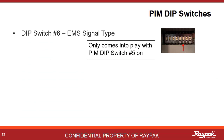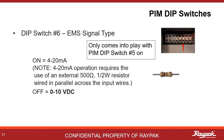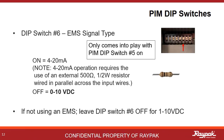Dip switch number six only comes into play when dip switch number five is on. Here's where you select what kind of signal is needed. On indicates a 4 to 20 milliamp signal, while off indicates a 0 to 10 volt DC signal. If not using an energy management system, leave dip switch number six on the PIM off.